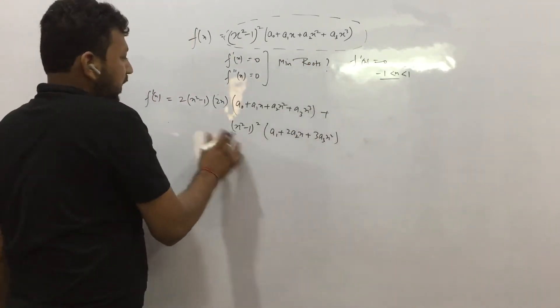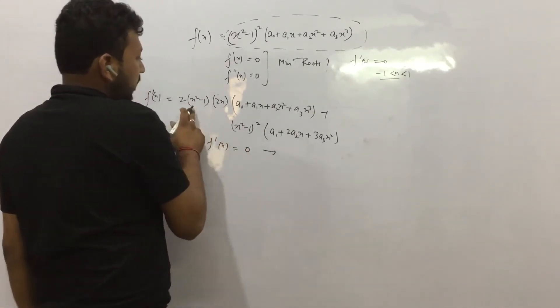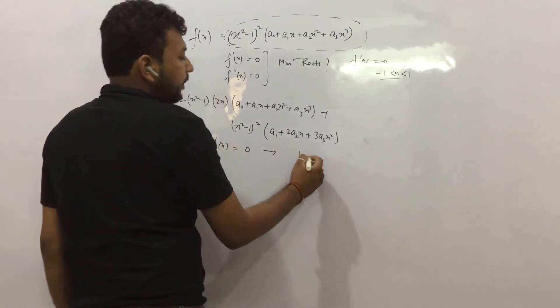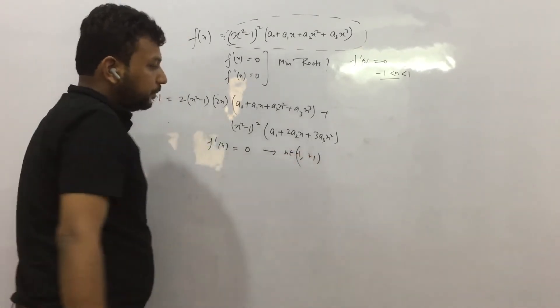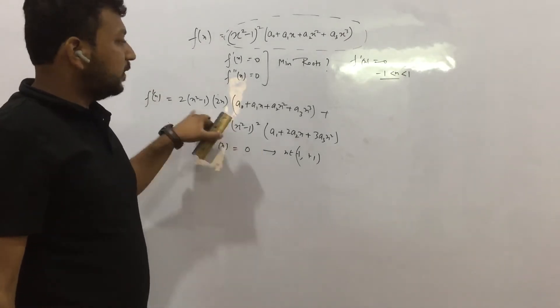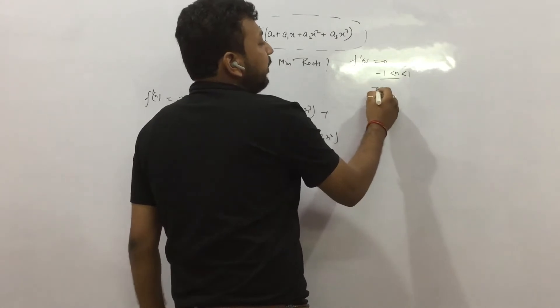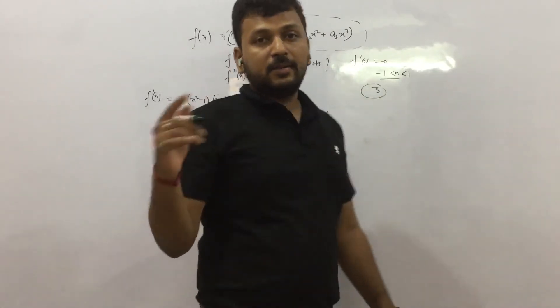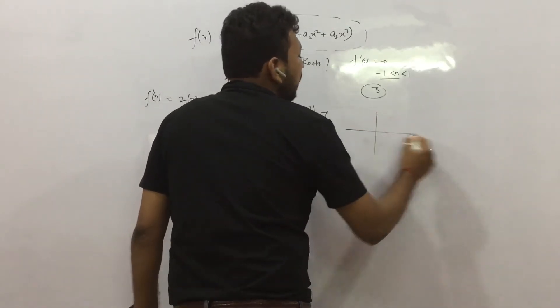So we can see again f'(x) is equal to 0 at 1 and -1. x belongs to (-1, 1). Yes. So f'(x) is becoming 0 at 2 points. Now f'(x) is 0 between these also. So we have 3 points at which f'(x) is 0.